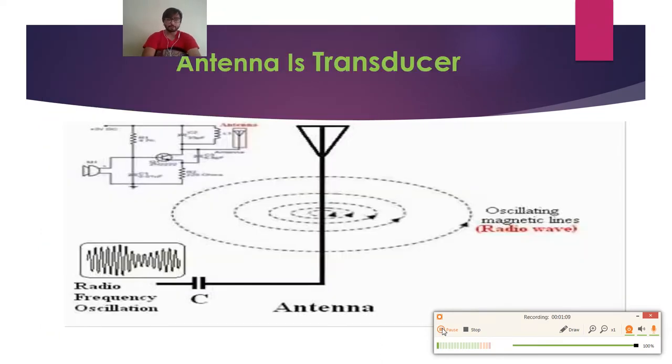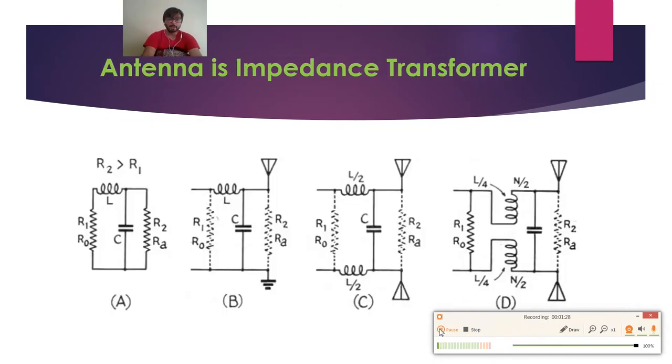Friends, antenna is a transducer for this reason: a transducer is a device which converts one energy form to another, and antenna does the same because it converts electrical signals into electromagnetic waves which radiate into free space. It is also an impedance transformer because its impedance varies as per time, and antenna does not radiate until the impedance is equal to the impedance in air.